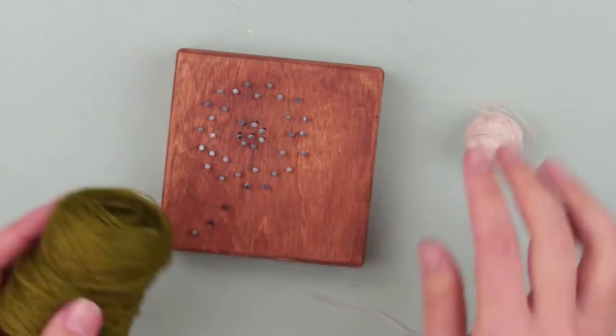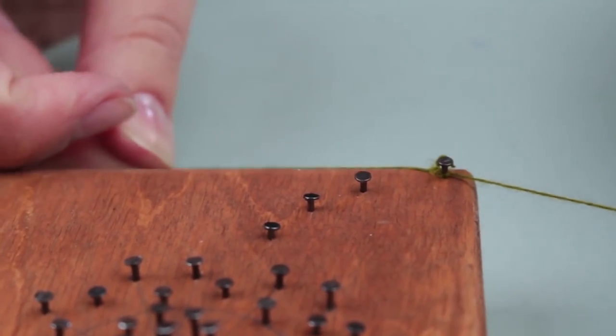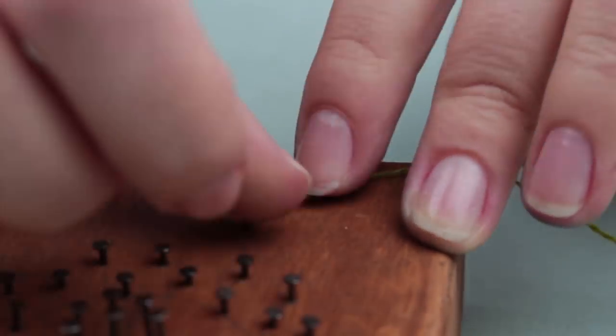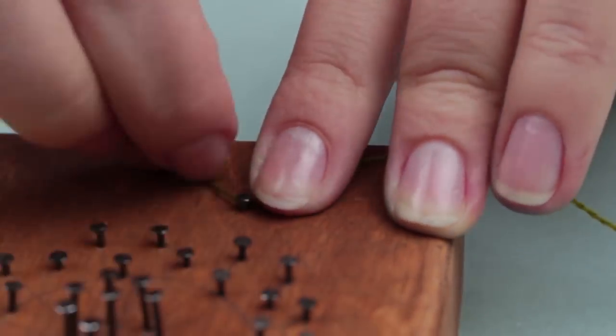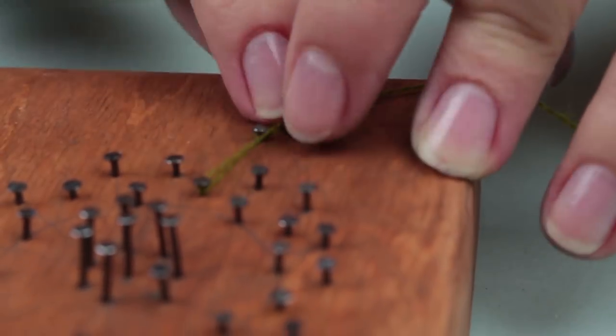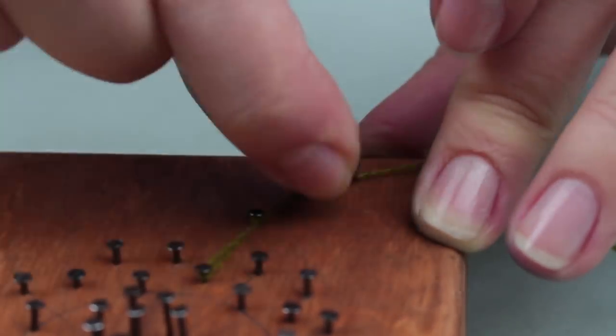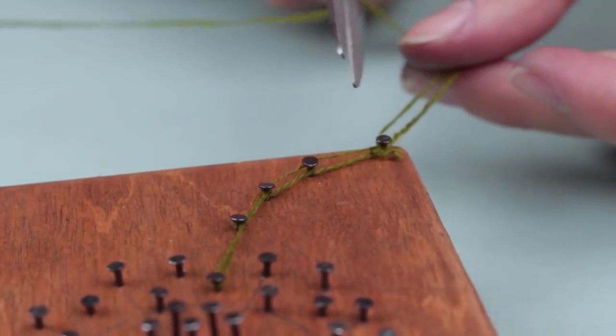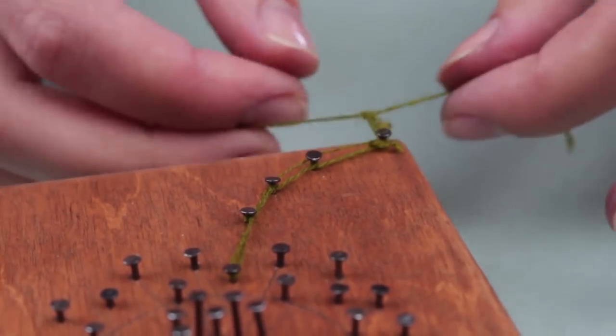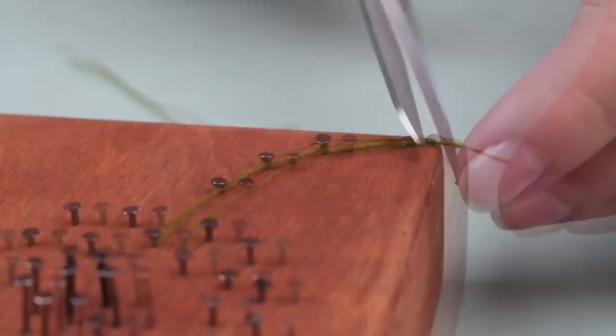We'll need white and green threads for the next step. Fasten the end of the green thread around the nail edge. Weave around the nails, shaping the dandelion stem. Wind around each nail. The nail heads will keep the thread in place. Cut off the excess. Fasten the end of the thread around the first nail. Hammer the nail to attach the thread with the nail. Cut off the excess.